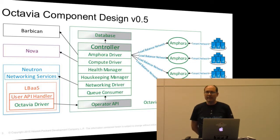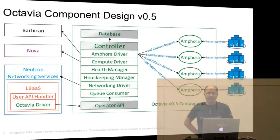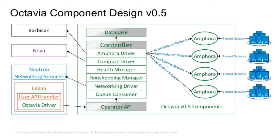Here's the component design. We use a lot of third-party things and are trying to add even more. Most basically, we integrate with the LBaaS V2 system via an Octavia driver. So all the commands you're used to — controlling your A10 load balancer, NetScaler, or whatever — you can use with Octavia. This driver talks to a REST API we call the operator API. Right now it's internal, but we're hoping to spin it out into a real operator API to manage and control all the load balancers.